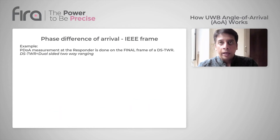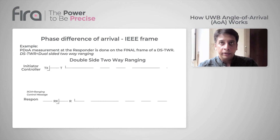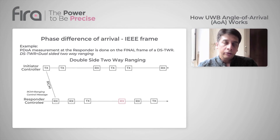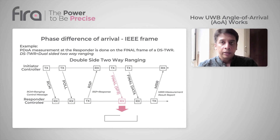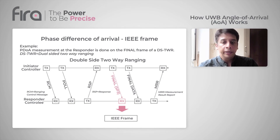In two-way ranging, you can do angle of arrival for an IEEE frame by looking into the final message from the initiator. You have a typical sequence of poll, response, and final messages. On the responder side, when it receives the final message, it can look into the IEEE frame, calculate the PDOA, and then arrive at the angle of arrival.